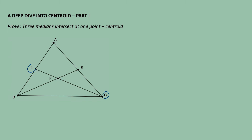Here in triangle ABC, we already have two medians which are CD and BE. But if you draw the third median, the third median must pass through point A, and it won't go this way or that way. Instead, it will exactly pass through point F. But why is it like that?